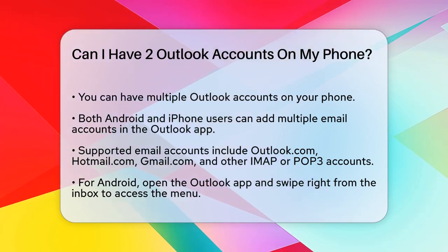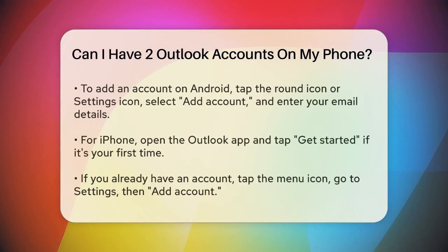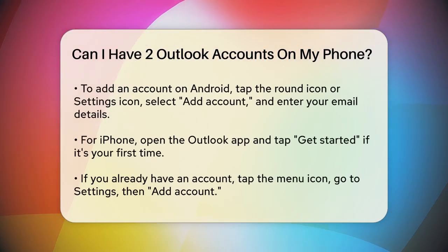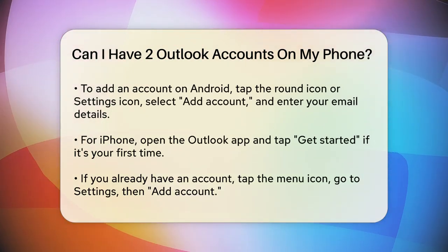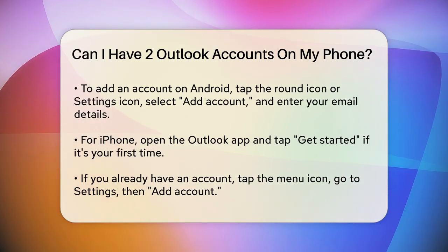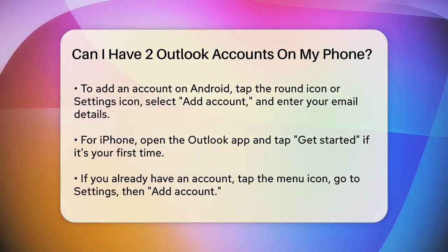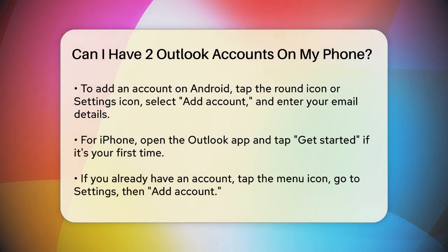To add multiple accounts on your Android device, start by opening the Outlook app. If you don't have it yet, you can download it from the Google Play Store. Once you're in the app, swipe the screen to the right from your inbox to see the menu. Tap on the round icon at the top or the settings icon at the bottom to add a new account. Select Add Account and follow the prompts to enter your email details and password.